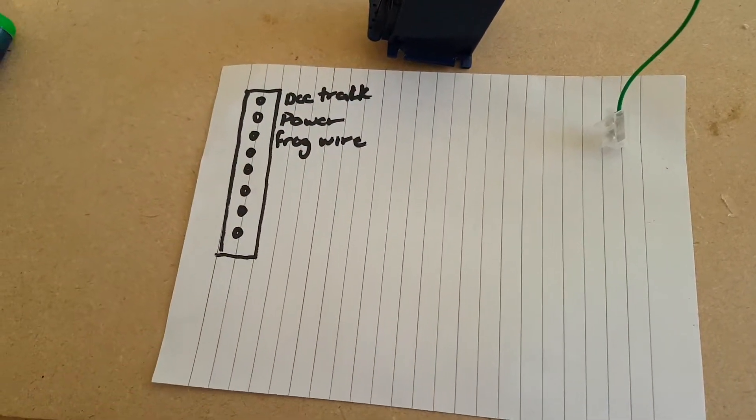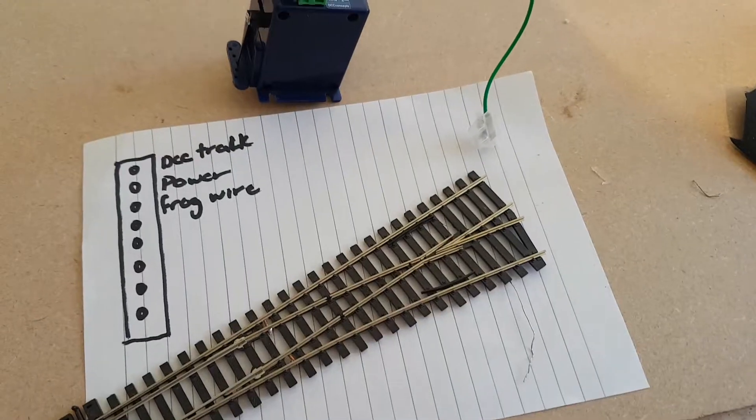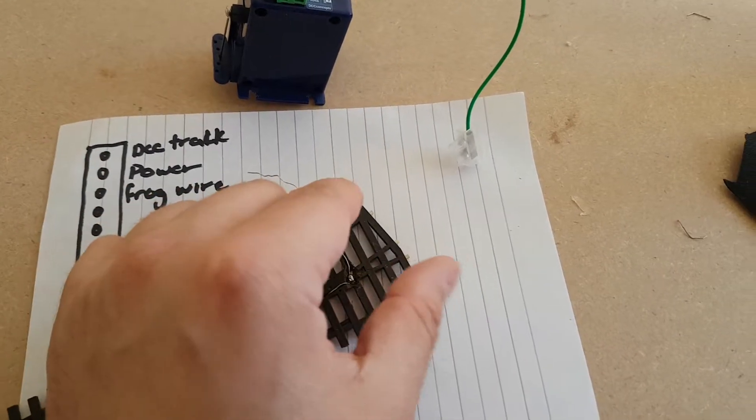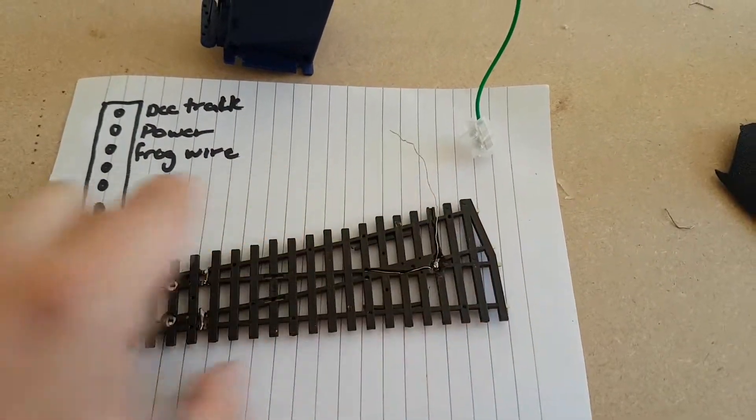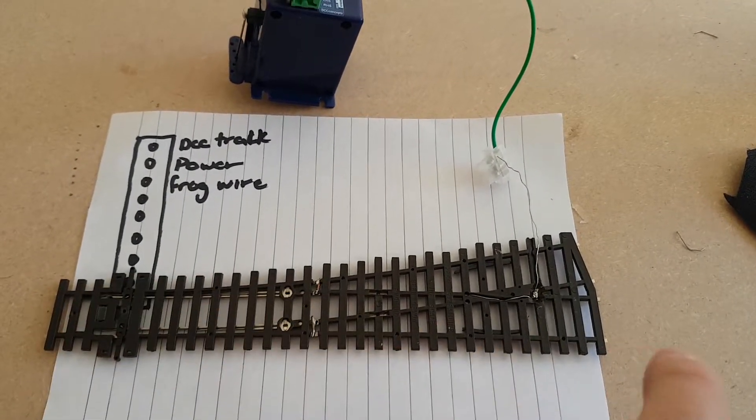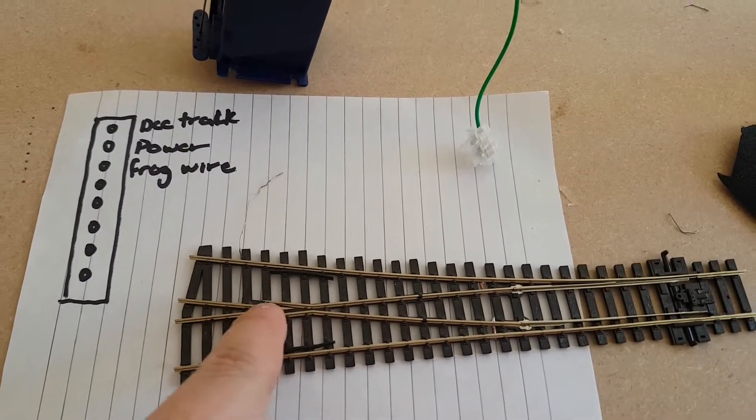The frog wire goes to the dropper on the frog of the point. The frog wire attaches to this wire here that goes to this green wire here, so that changes the polarity of the switch on here.